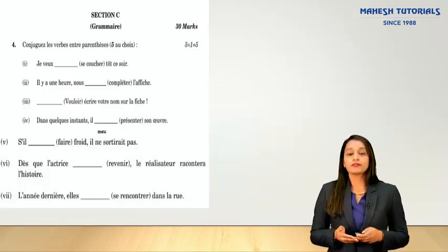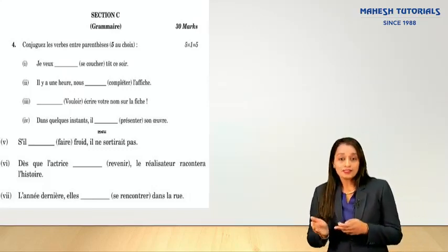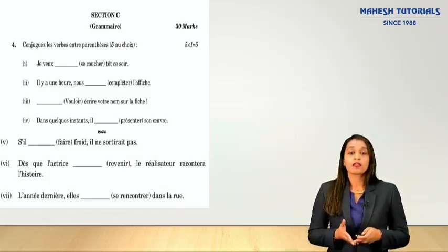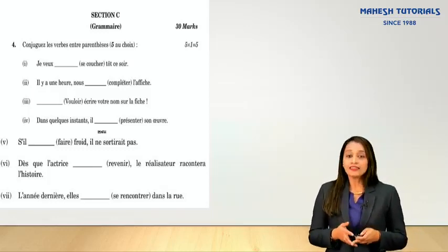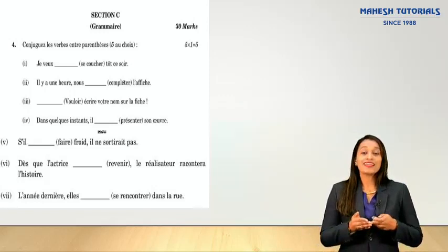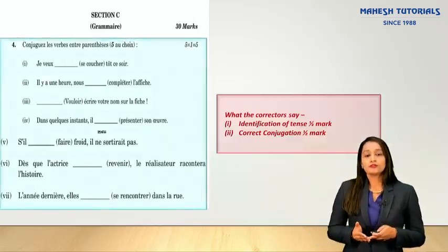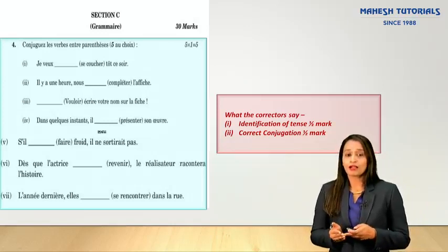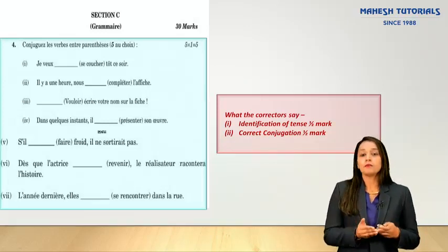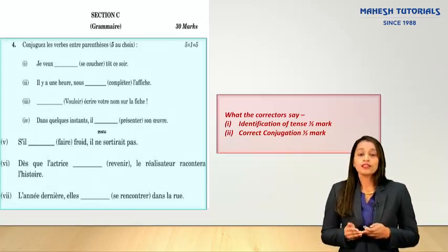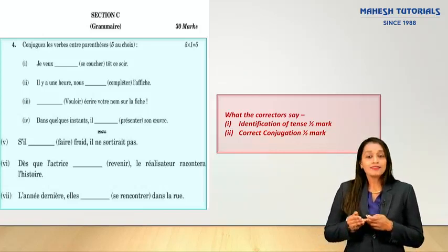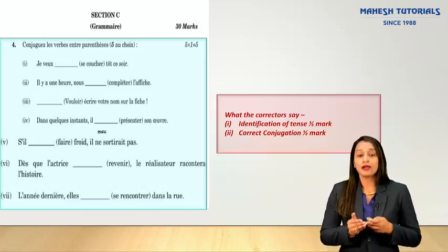Under Section C, the first question is on tenses — all tenses from 9th and 10th standard are covered. Read the sentence carefully, identify the hint words, and conjugate the verb as per the subject. Half a mark is allotted for identification of the tense and half a mark for correct conjugation, giving one mark per sentence. Identify the subject noun or pronoun and conjugate accordingly.